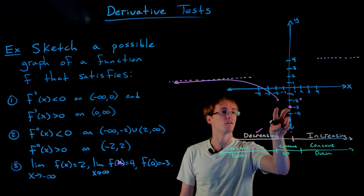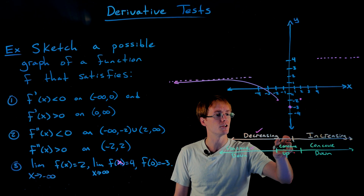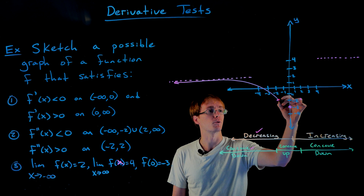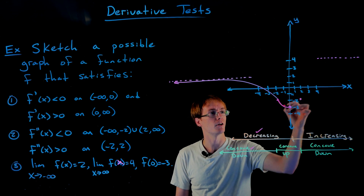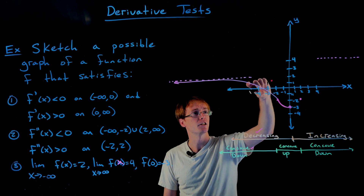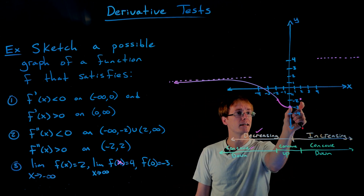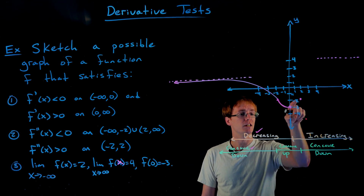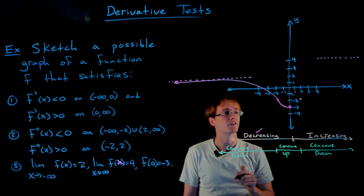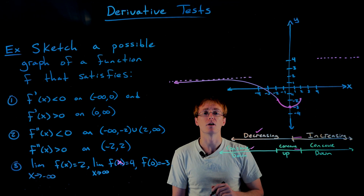On the interval from negative two to zero, our function is still decreasing but now concave up, so it goes down while bending upward — you can see the inflection point where concavity changes. From negative two onward we are concave down, then concave up as we hit the local minimum. On the next interval from zero to two, the first derivative is positive so the function is increasing, and we are still concave up, so the graph increases while bending upward.